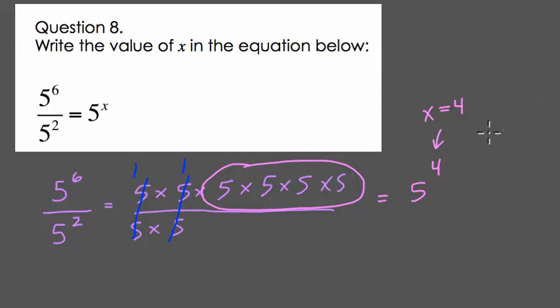As a nice shortcut, when you're dividing with the same base, 5 and 5, or any same base, you can simply subtract the exponents. Notice that 6 minus 2 is indeed 4.